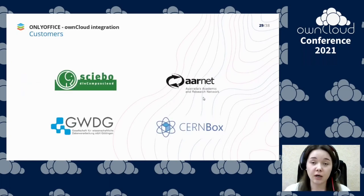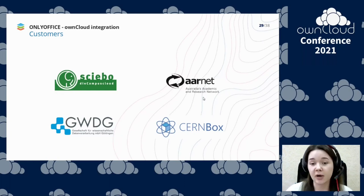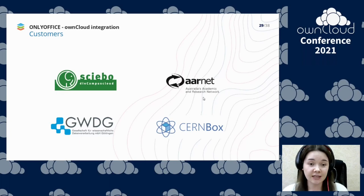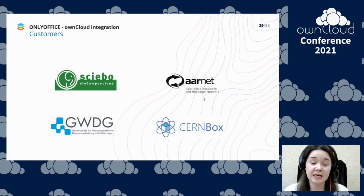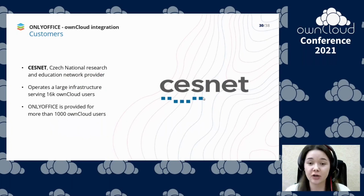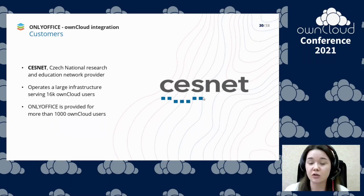There are many users and partners already taking advantage of our integration with OnCloud. Among them is Scebo, a non-commercial cloud storage for research, teaching and studying, with whom we have worked since 2017. GWDG, a joint facility of Göttingen University and the Max Planck Society. Arnet, the founder of the internet in Australia, with whom we have worked since 2018. OnlyOffice is also being tested by CERN as part of their CERN Box. As new use cases, today we would like to present Cessnet, a developer and operator of national e-infrastructure for science, research, development and education in the Czech Republic — they operate a large infrastructure serving 16,000 OnCloud users, with OnlyOffice Docs provided for more than 1,000 OnCloud users.